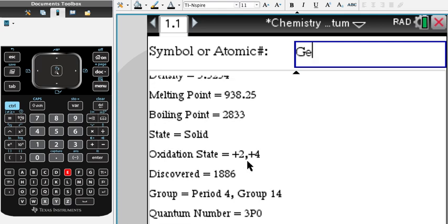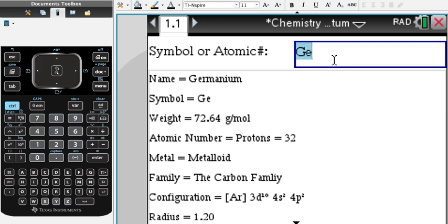the radius, the boiling point, melting point, state, oxidation state, when it's discovered, its group, even its quantum number. So it basically has everything. Let's try another one out.